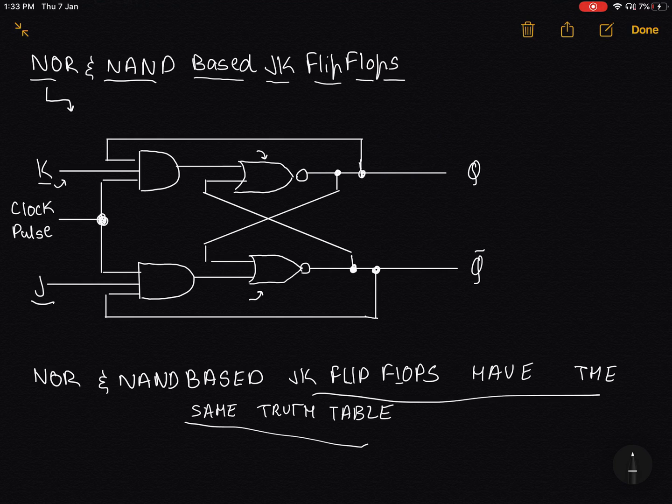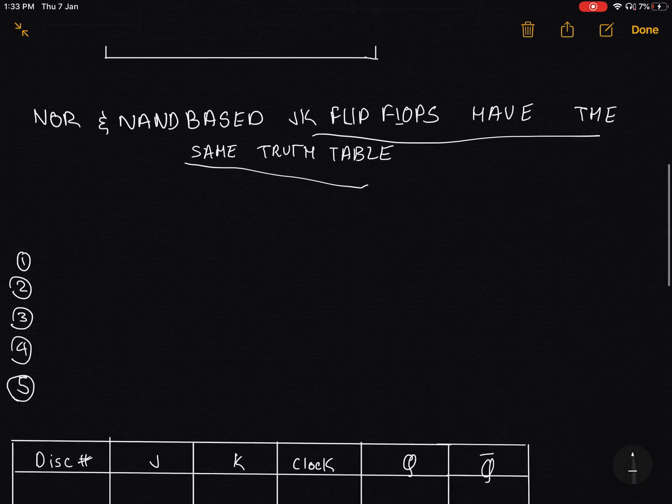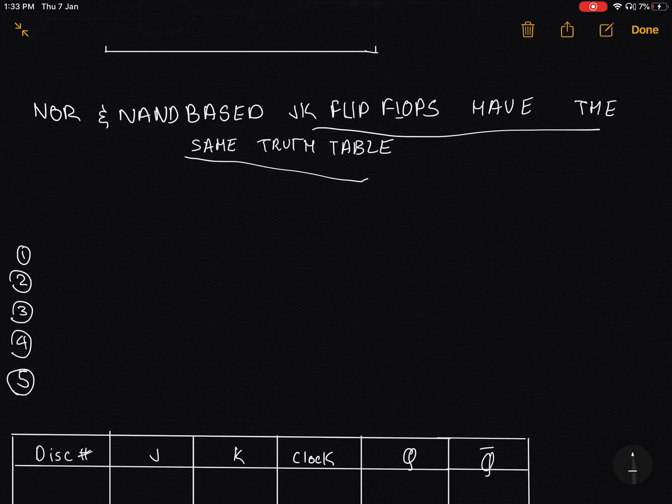Just remember that you can notice the difference between SR and JK flip flops if you have a clock pulse. So if there is a clock pulse in the diagram, it's definitely a JK flip flop and not an SR flip flop.